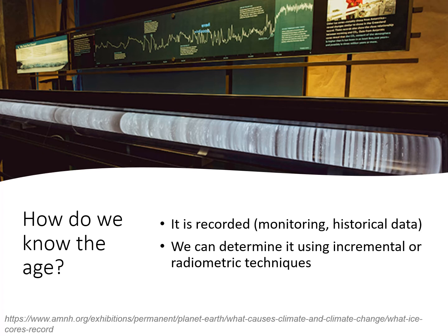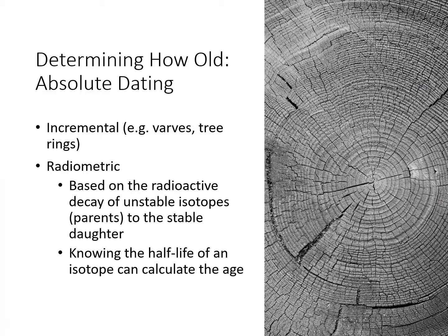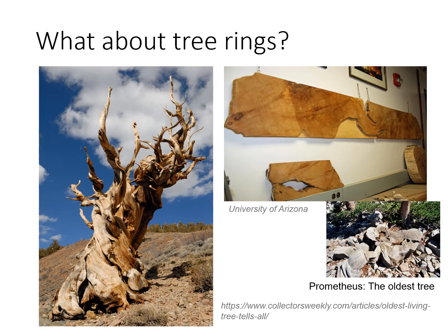We have two main approaches: incremental and radiometric dating. Very basically, incremental dating involves counting layers, whereas radiometric dating is based on the radioactive decay of unstable isotopes to stable nuclei. If we know the decay constant — that is, the rate the radioactive isotope decays — we can determine the age. Incremental dating can be used to date tree rings, ice cores, and lake sediments.